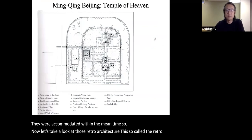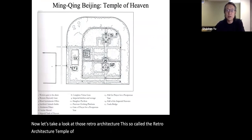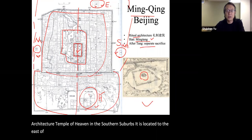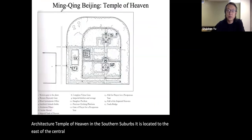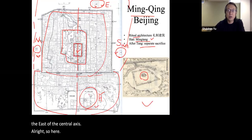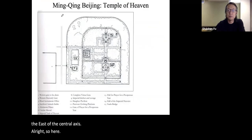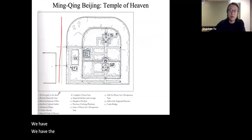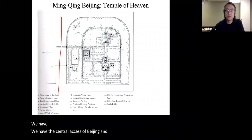The emperor needed to perform sacrifice to heaven, to earth, to the sun, and to the moon in different months and different seasons — pretty much what the Mingtang had been accommodating. After the Tang dynasty, those sacrifices were made in separate buildings, whereas before, especially according to the Zhou dynasty ideal, they were accommodated within the Mingtang. Now let's take a look at those ritual architecture. The Temple of Heaven in the southern suburb is located to the east of the central axis of Beijing.